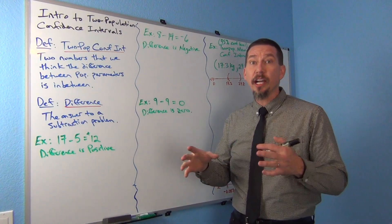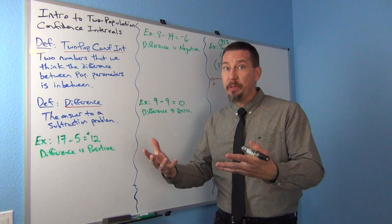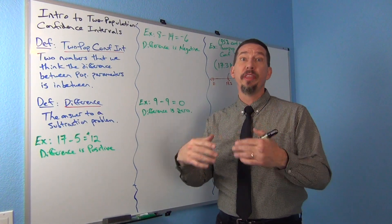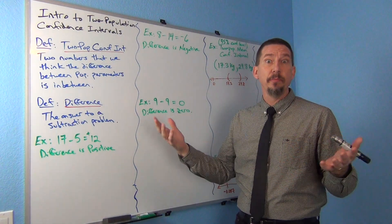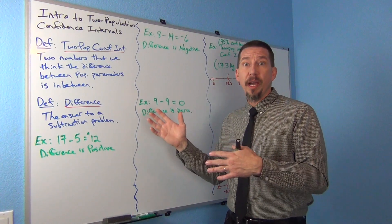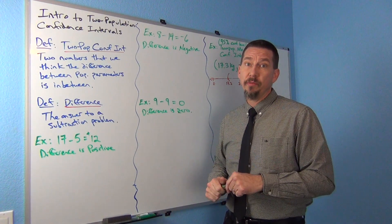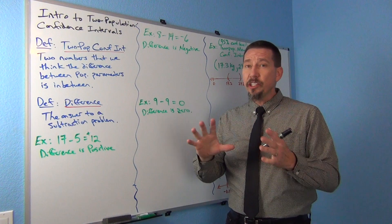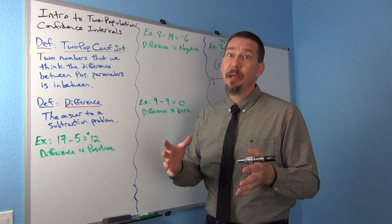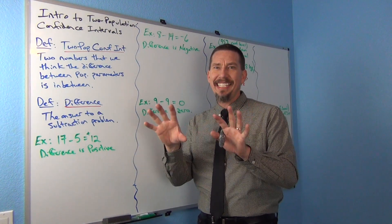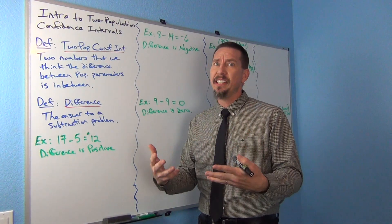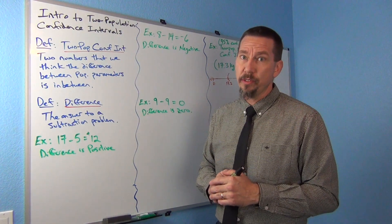Last time we talked about a one population confidence interval, which was two numbers that we think a population parameter is in between. But today we're moving into two population confidence intervals, and it's important that you get the idea of it. This lesson is really just about developing the idea behind two population confidence intervals.